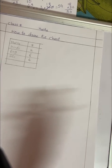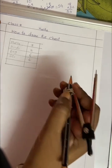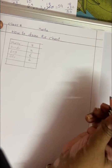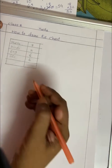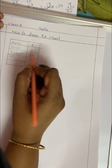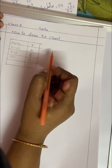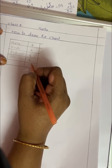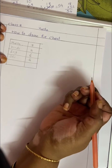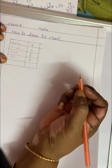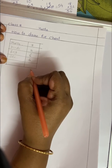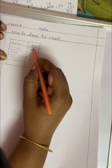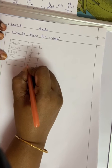Hello students, welcome to the channel. In math today we learn how to draw a pie chart. In a class test, a student got marks: Math 8, English 6, and Science 4. For these marks, how to draw a pie chart? First of all, we have to take the total of these numbers.